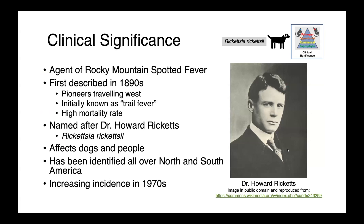We'll start our discussion with Rickettsia rickettsii, the agent of Rocky Mountain spotted fever. This disease was first described in the 1890s in pioneers moving west across North America, and was initially known as trail fever. It had a really high mortality rate, creating a large burden of illness. This organism is named after Dr. Howard Ricketts — both the genus and the species bear his name. Interestingly, as a physician interested in vector-borne diseases, Dr. Howard Ricketts actually died of typhus.